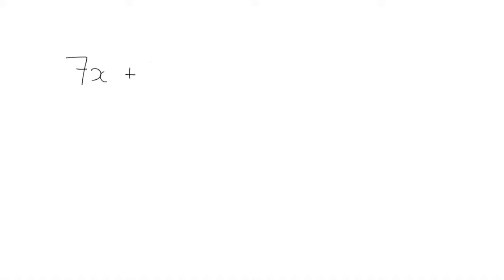The other thing we learned is that we use inverse operations to undo or get rid of the things we need to get rid of in the equation. So let's look at an equation like this one: 7x plus 3 is equal to 3x plus 15.